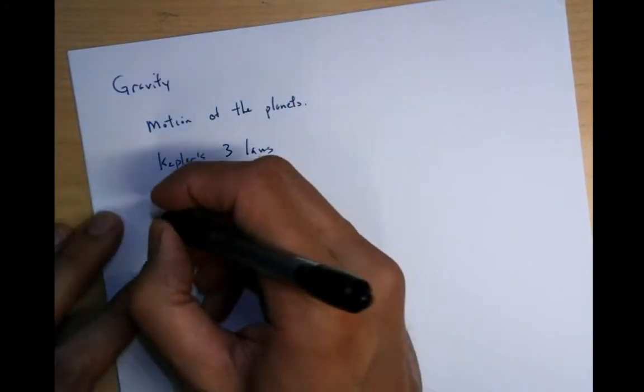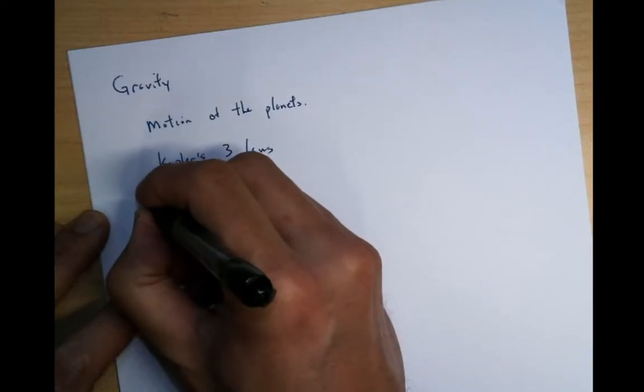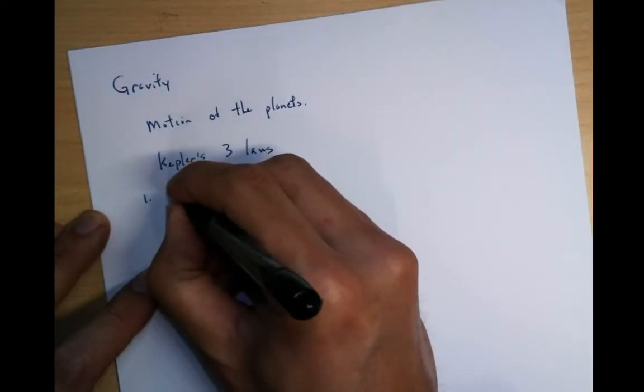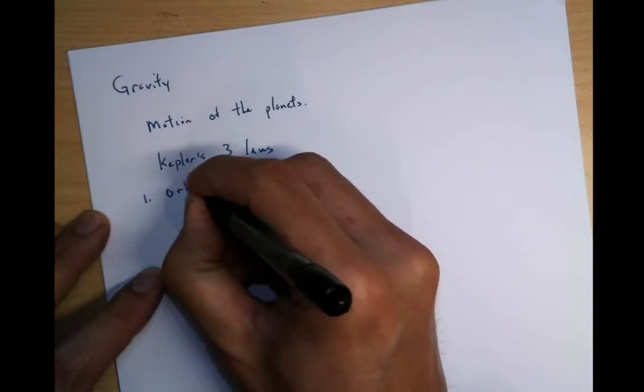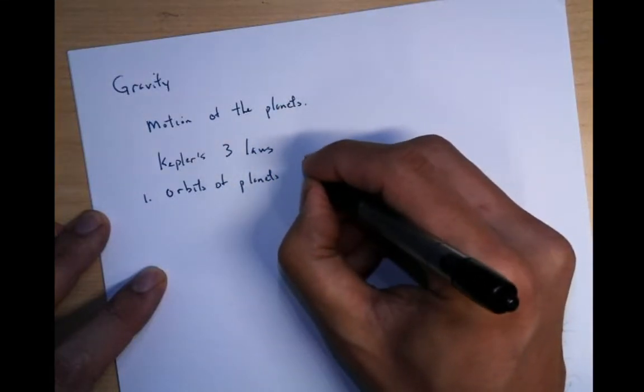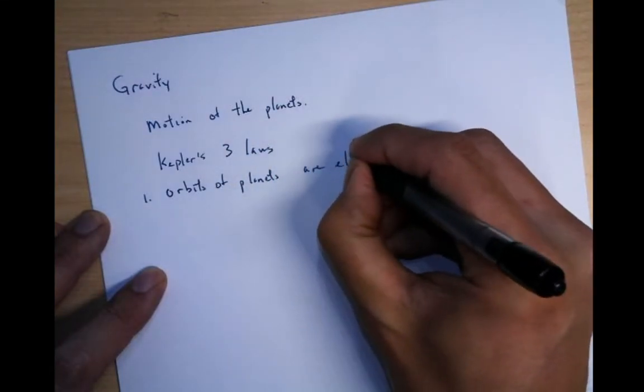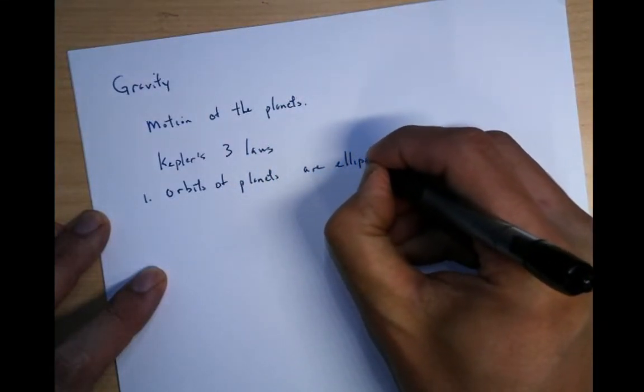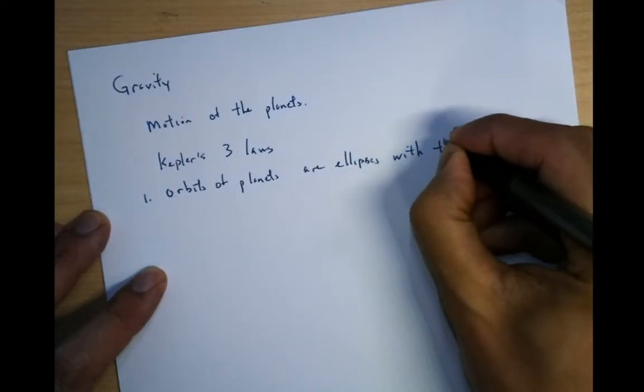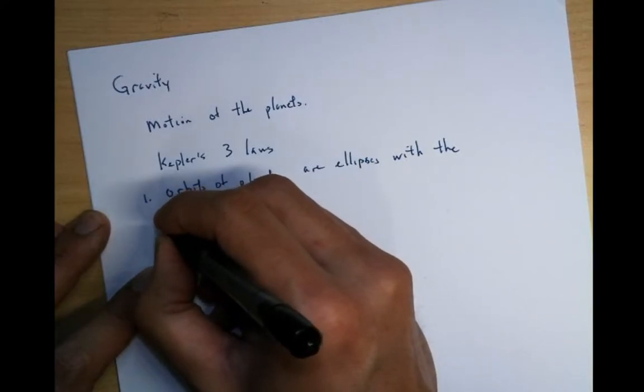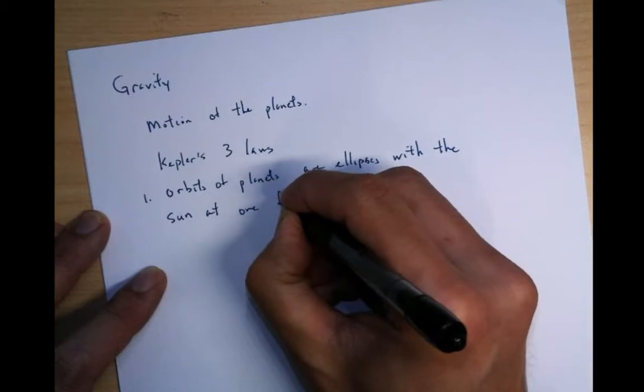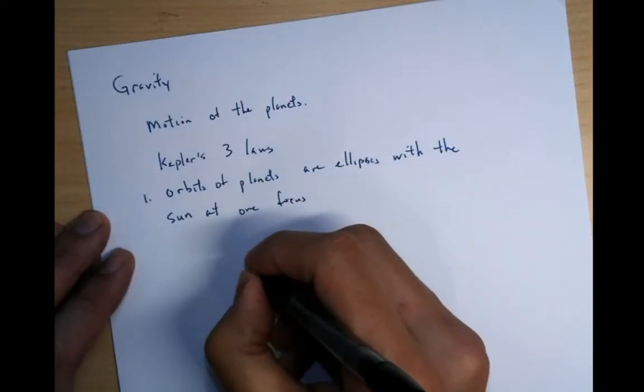So in the 17th century, a person named Johannes Kepler came up with Kepler's Three Laws. So let's take Kepler's Three Laws first. Let me draw an ellipse first.